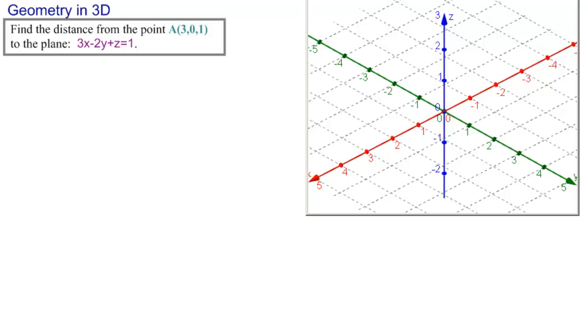Let's see this geometrically, and then we will solve algebraically. So here is our three-dimensional space. Let's draw our point A(3,0,1), so 3 on the x, 0 on the y, and 1 on the z. There's our point A.